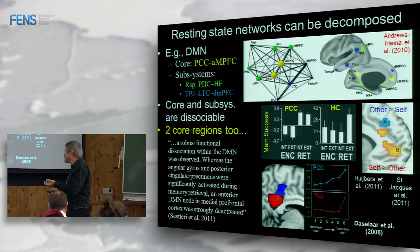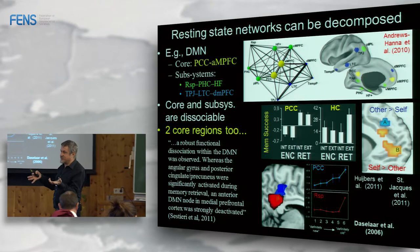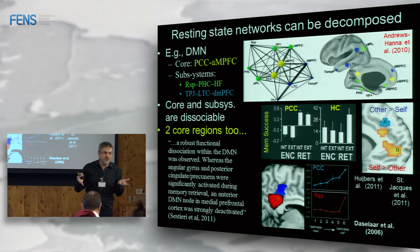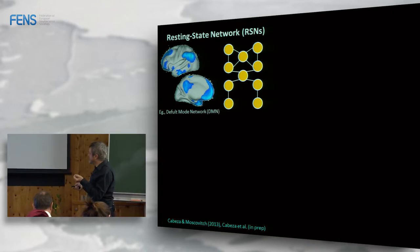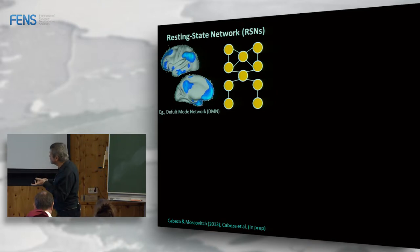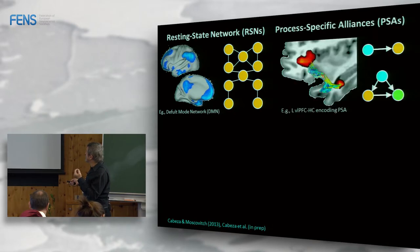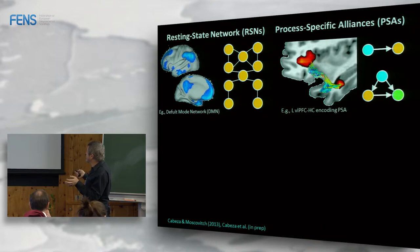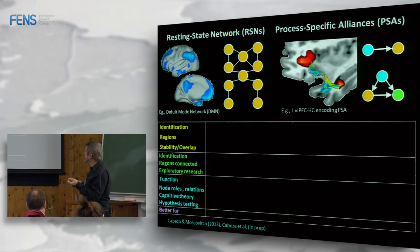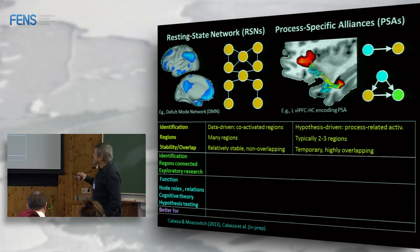When you keep dividing these regions and each plays separately, you start wondering how useful it is to talk about networks as fixed things that can be named and identified as groups of regions that tend to go together. They may be very useful for clinical research — putting people in the scanner for five minutes to compare patient groups — but they're not always useful for cognitive neuroscience research. So with Mauricio Moscovitch, we have been working on the idea of process-specific alliances, or PSAs.